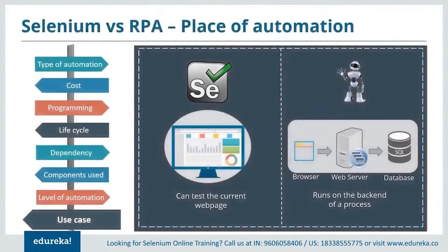Now let's talk about the use case of automation — where does the automation take place? Selenium works on the front end of the process and can test only the current web page. Whereas RPA works on the back end and deals with processes that are time-consuming. The browser details are sent via the web server and stored in a sequence onto the database.